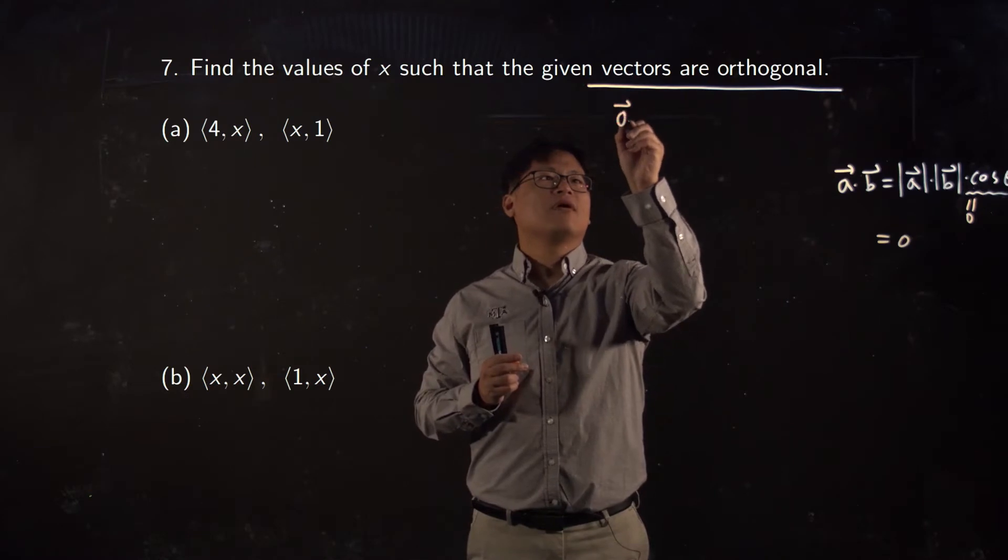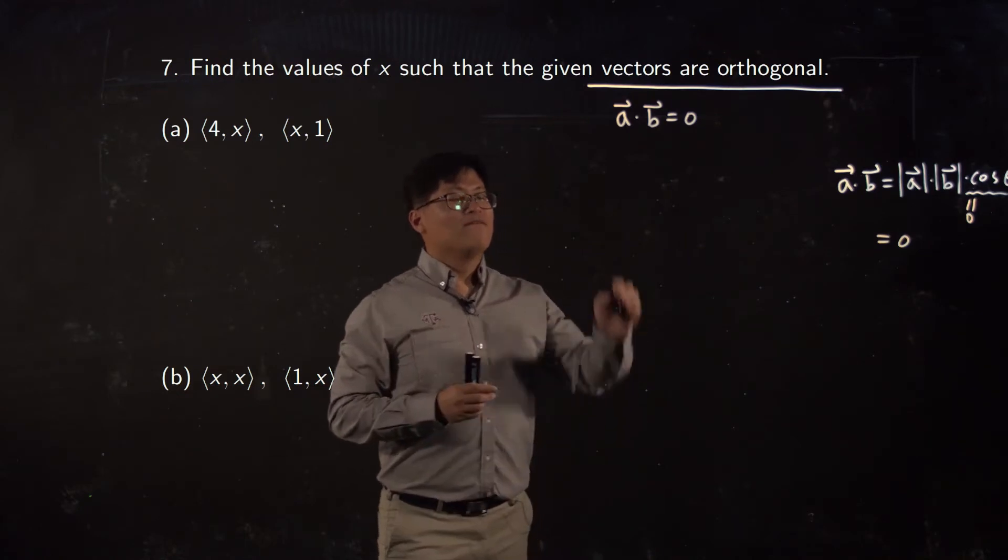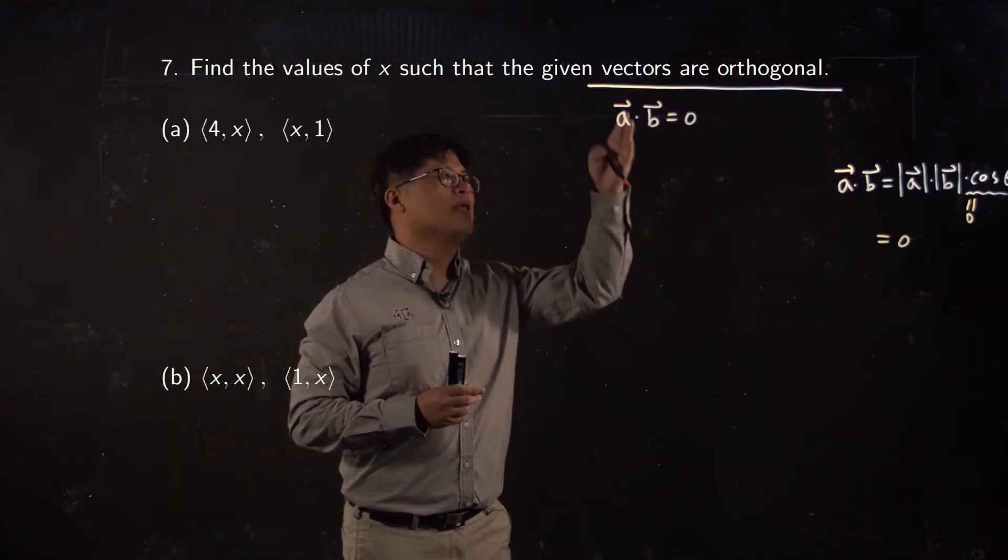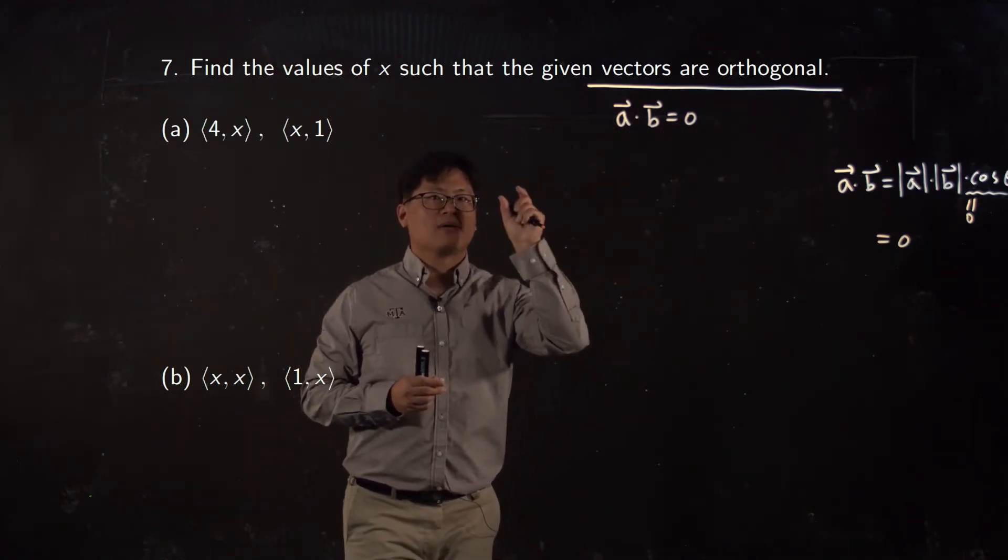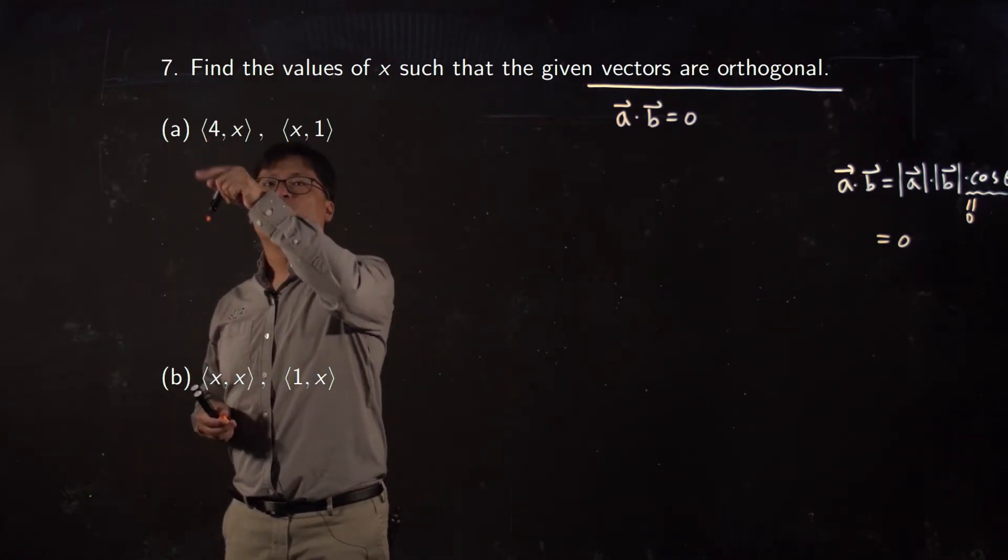We can say vector a dot b is equal zero. Or, vector a dot b is equal zero, then your vectors a and b are orthogonal. Is that clear?